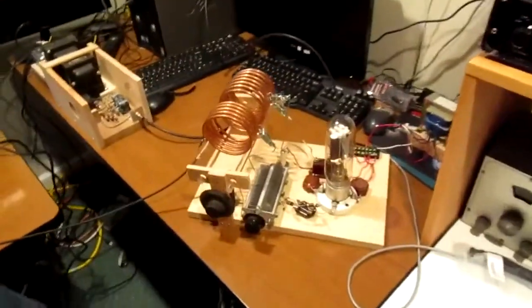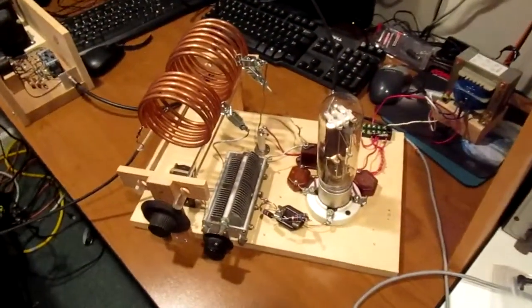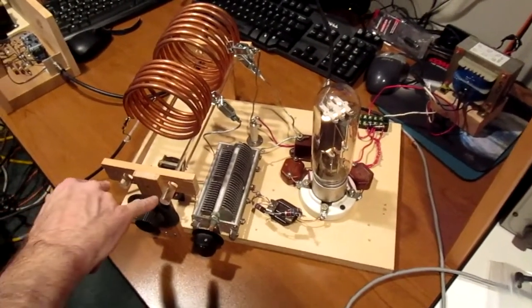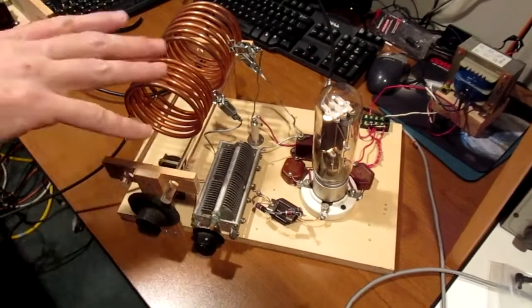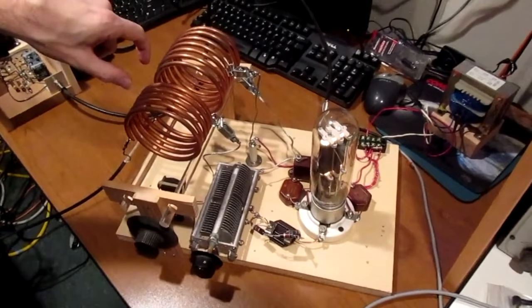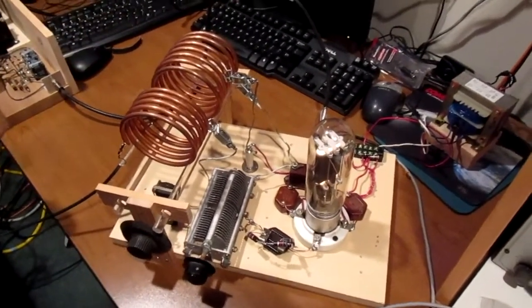Yeah, we got a 40 meter transmitter right over here. You see the filament's been lit on this. We were just tuning this up. Again, this is a Hartley oscillator. We've got two pieces of glass up here that are acting or holding the coil. You've got the tank coil here, and this is just the antenna coupling coil going out to the antenna.